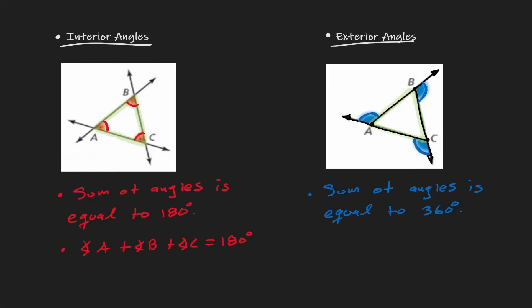So let's summarize: if I add the interior angles, they sum to 180 degrees — a semi-circle. If I add the exterior angles, they sum to 360 degrees — a full circle. These are the properties that come with these types of angles.